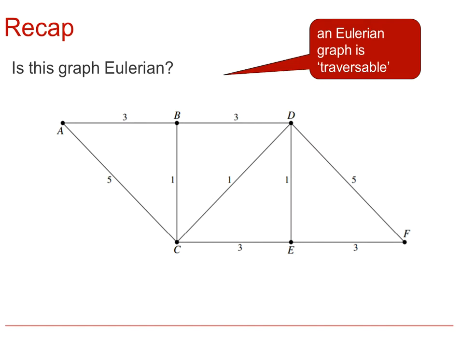You may remember that a graph is said to be Eulerian or traversable if you can travel all the arcs and edges once and once only and get back to where you started. Practically you can test this by seeing if you can draw a graph or network without taking your pen off the paper.